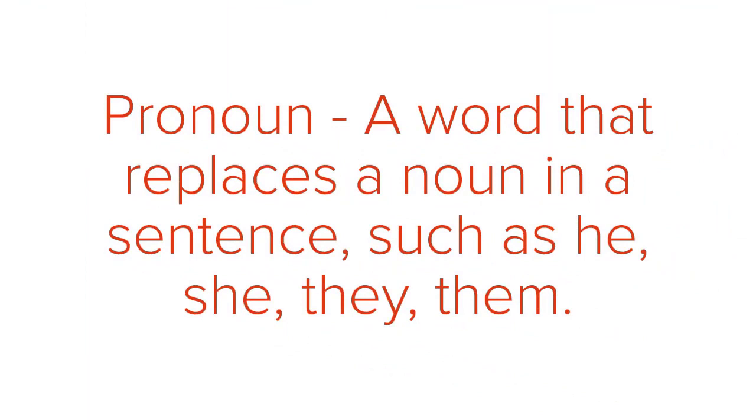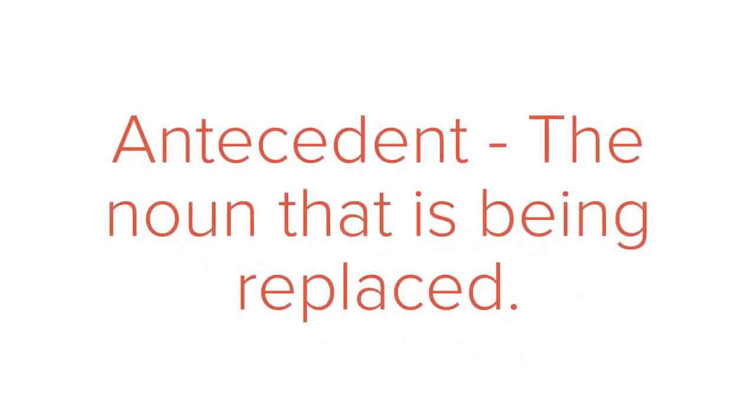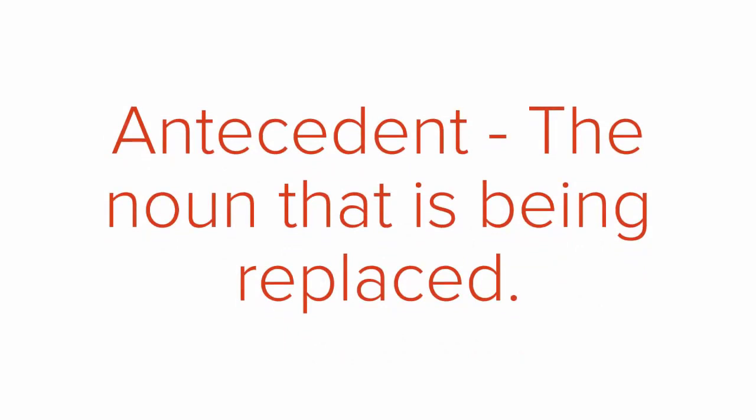To summarize, a pronoun is a word that replaces a noun in the sentence, such as he, she, they, or them. And an antecedent is the noun that is being replaced.